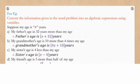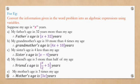Now let's see how to convert the information given in the word problem into algebraic expressions using a variable. Suppose my age is X years. They have said my father's age is 32 years more than my age. More means addition, so father's age will be X plus 32 years. Then, my grandmother's age is 10 more than 4 times my age. 4 times means multiplication, so 4X. And grandmother's age is 10 more — more means addition — so grandmother's age is 4X plus 10 years.